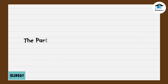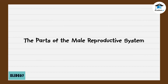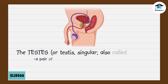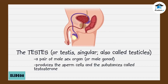Let us go over the parts of the male reproductive system and learn about their tasks, particularly in the process of ejaculation. The testes is a pair of male sex organs, or male gonads, that produces the sperm cells and the substance called testosterone.